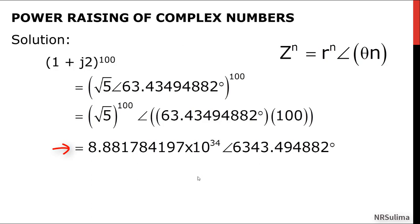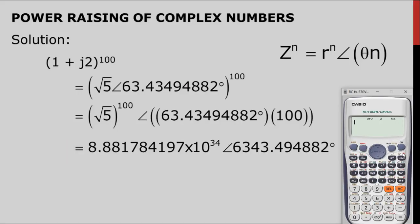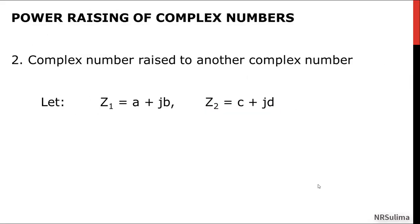We can have this as our final answer, but we are almost always interested in expressing the final answer in rectangular form. To do that, type 8.88178 times 10 raised to the power of 34, angle 6,343, and press equal. It will automatically give the equivalent rectangular form. The answer is negative 6.4436 times 10 to the 34, minus J 6.11 times 10 to the power of 34.